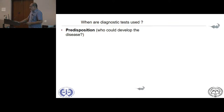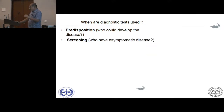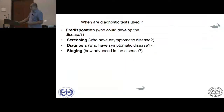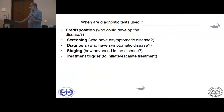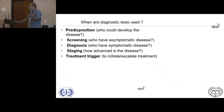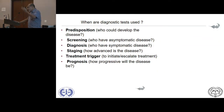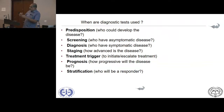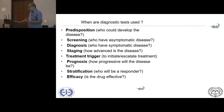Diagnostic tests are used in many ways: in predisposition, to see who is going to develop a disease; in screening; in actually diagnosing the disease; in staging cancers; or when you decide to trigger or increase treatment because the person is not doing well. Or you want to see what the prognosis will be, or to stratify patients to see who is likely to respond better — in a way, it's like staging and deciding on treatment.